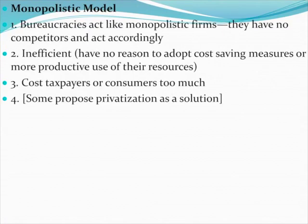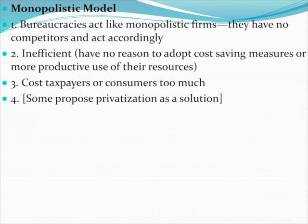The monopolistic model argues that bureaucracies operate as any organization with a monopoly would. That is to say, they don't have to care about being efficient, because if they're not efficient, they're not going to go out of business — they're the only game in town. This means operations are inefficient, the cost to the taxpayer is excessive, and service is probably subpar because bureaucratic organizations do not have to please their customers. Some have suggested that privatization, partial or complete, is a solution to bureaucratic monopolies.